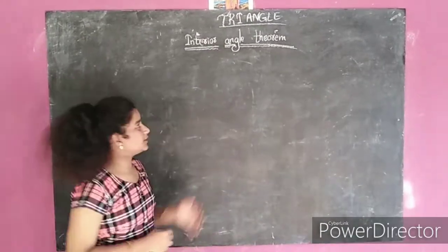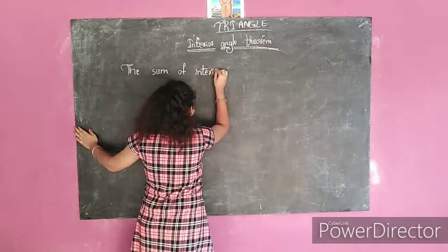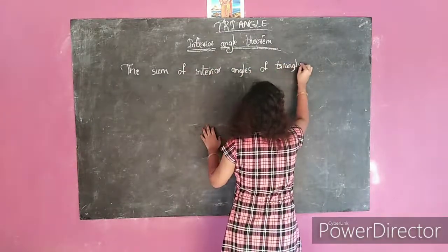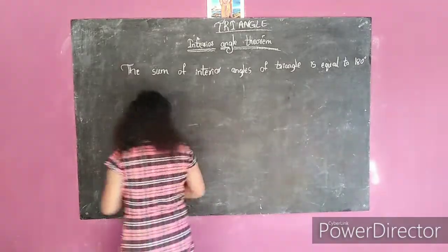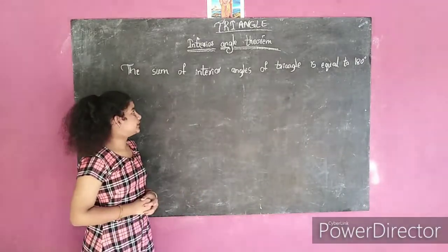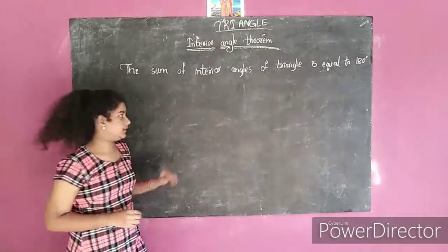Hello friends, today I will explain the Interior Angle Theorem. The Interior Angle Theorem states that the sum of the interior angles of a triangle is equal to 180 degrees.